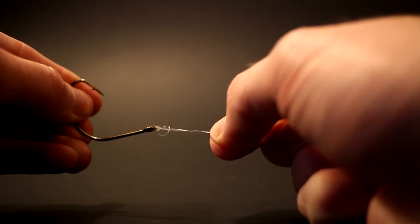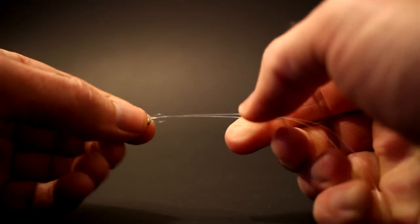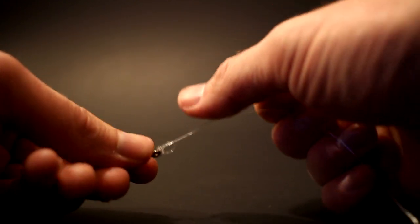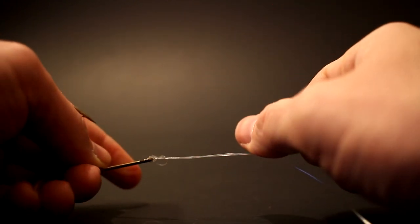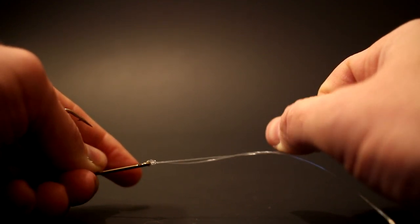Go ahead and cinch it down. Just pull tight. And then the last step, take the tag end and go ahead and just pull on that. That'll pull the remaining loop down against that overhand loop.